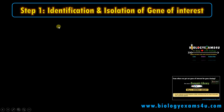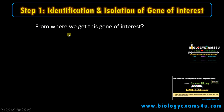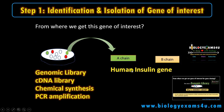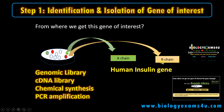Step one is identification and isolation of the gene of interest. The major source is a genomic library. If we are studying this gene for the first time, we need to construct a genomic library. Let's take insulin as an example. Human insulin gene is made up of two genes — A chain and B chain — so there are A gene and B gene coding A chain and B chain. The other sources are cDNA library, chemical synthesis, and PCR amplification. Chemical synthesis and PCR amplification are possible only if the gene is well known.